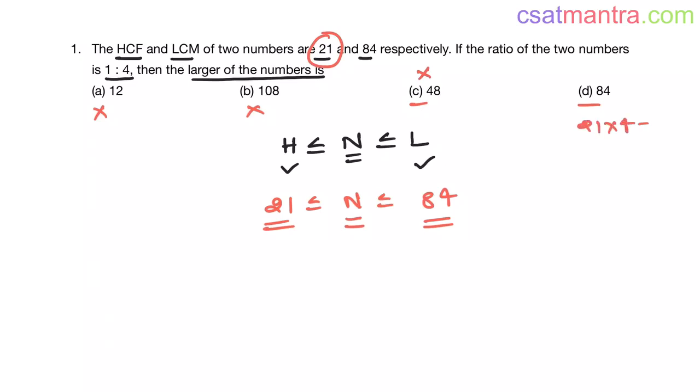21 times 4 equals 84 my friends. So our answer is D. Very simple, right.